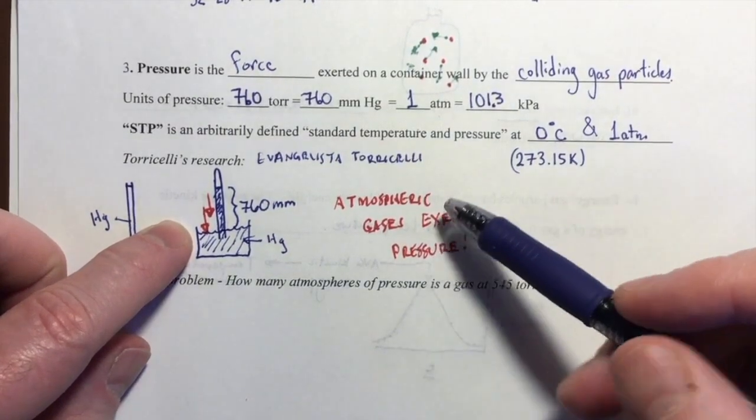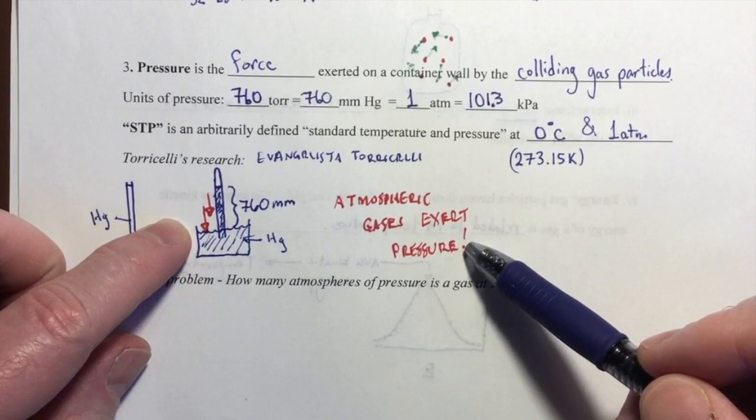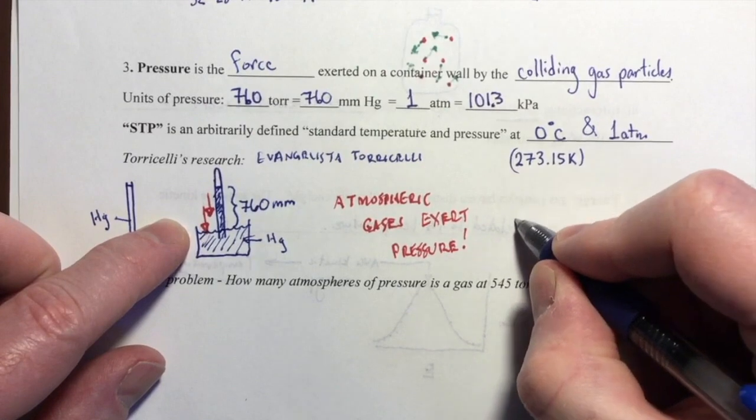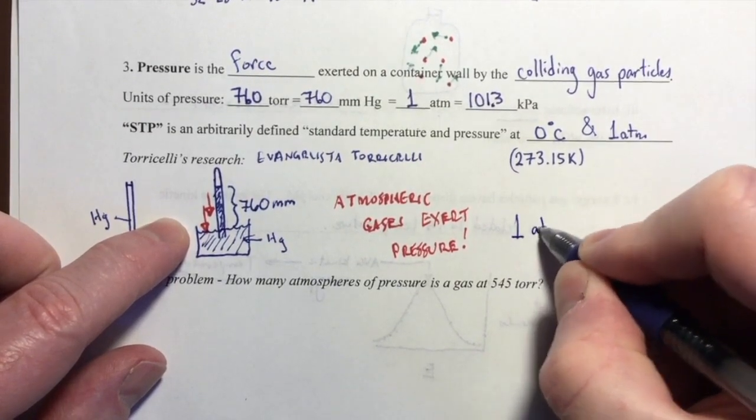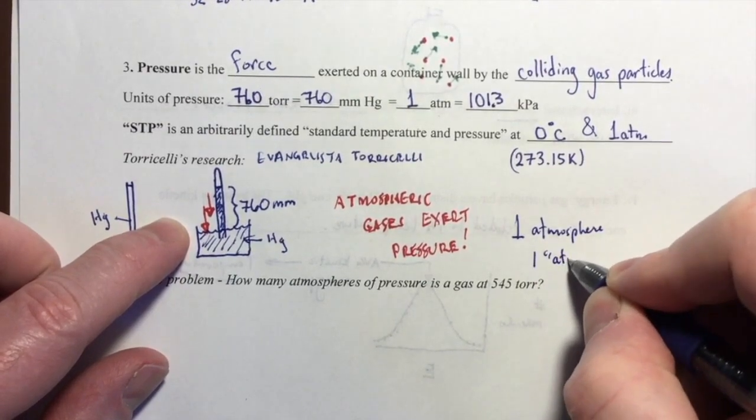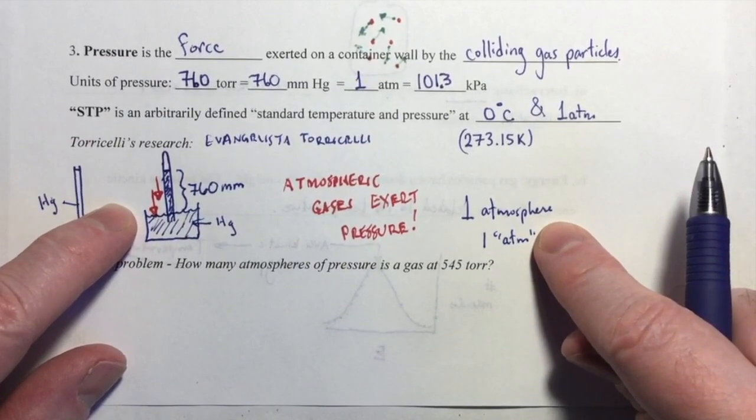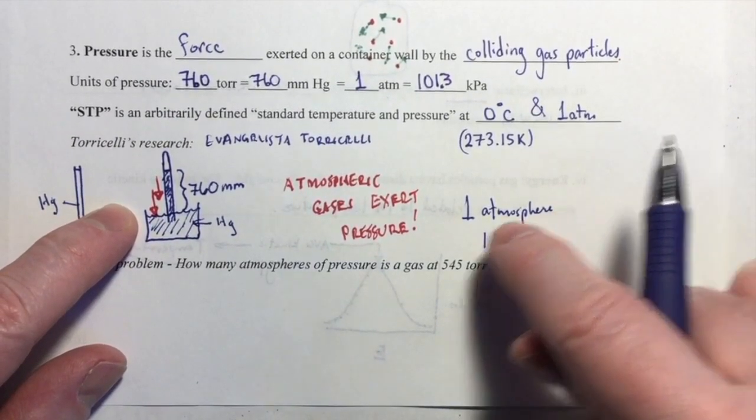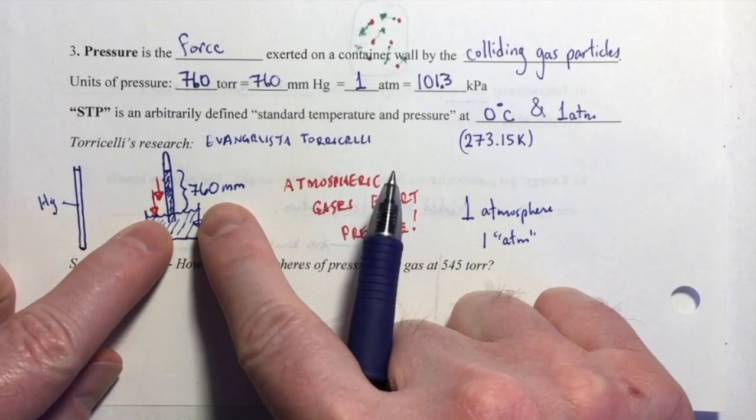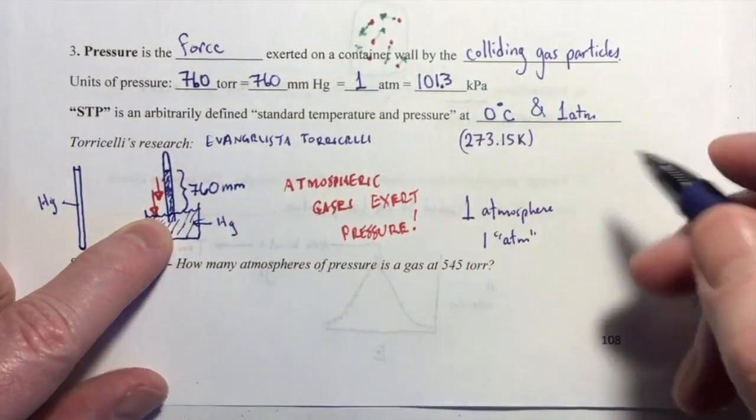And the atmosphere, we could say whatever the atmosphere is, we'll call it one atmosphere or one ATM. We will say that that pressure that the atmosphere exerts is the same pressure or force required to sustain a column of mercury 760 millimeters tall.